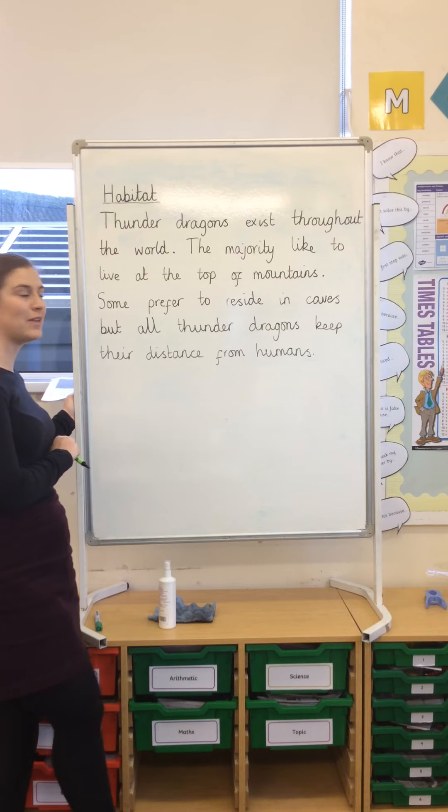So, for my paragraph I've written about habitat — where they live. I could have said 'Where do they live?' with a question mark as a subheading. So: Habitat. Thunder Dragons exist throughout the world. The majority like to live at the top of mountains. Some prefer to reside in caves, but all Thunder Dragons keep their distance from humans. During the day, Thunder Dragons fly among the clouds so that they cannot be spotted. That's my paragraph.